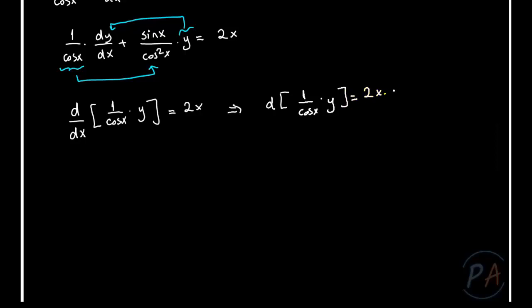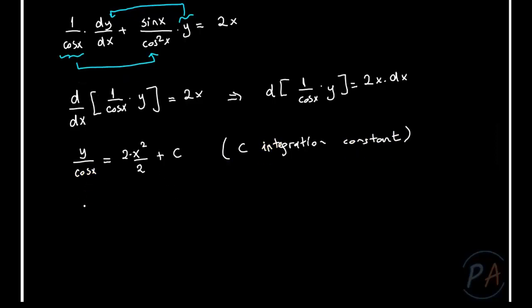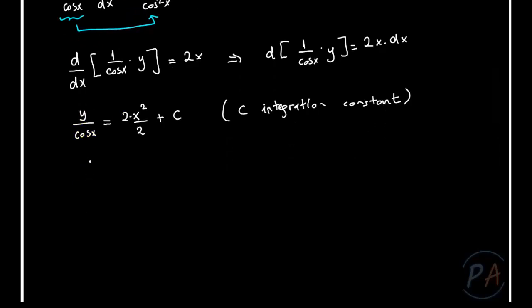So we have d/dx[y/cos(x)] = 2x. Integrating both sides, I obtain y/cos(x) = x² + C, where C is the constant of integration.